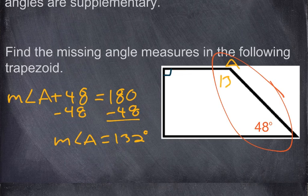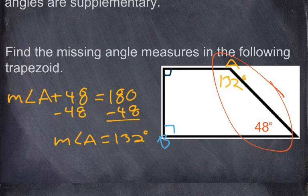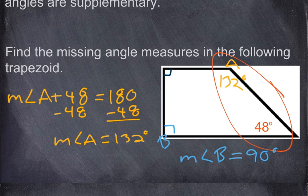So we know angle A is 132 degrees. Now for this other angle on the bottom left — let's call it angle B. Up in the upper left, we have a right angle, so that's 90 degrees, which means angle B also has to be 90 degrees because they must add up to 180. The two angles on the same side of the transversal inside the trapezoid are going to be supplementary.